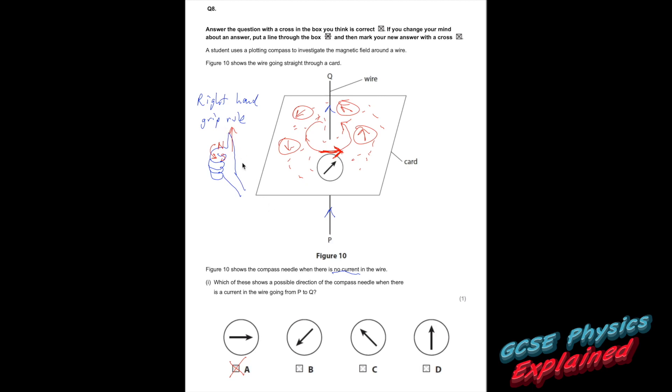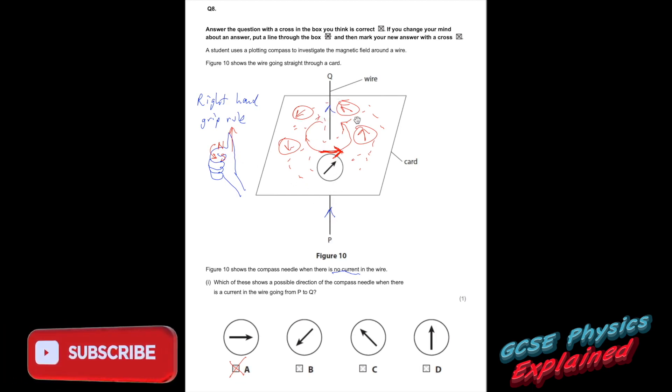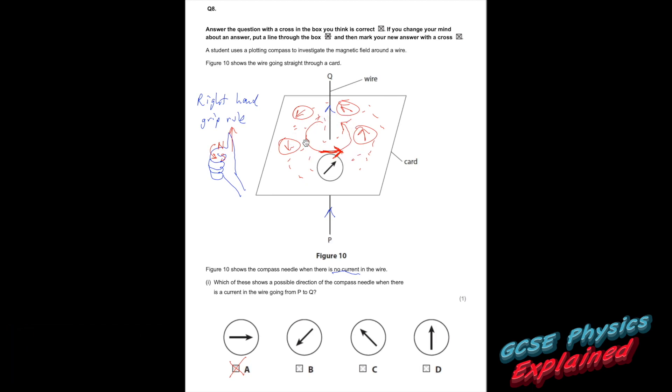Right, this is the right hand grip rule. So if you were to put your hand like that, with your crazy sausage fingers. Your thumb shows the direction of the current and your fingers would show the direction of the magnetic field. Knuckles are north, fingertips are south. So if you were looking down on the top of your hand, the field would be going anti-clockwise. So put your thumb going up from P to Q. Curl your fingers around. So the magnetic field, once there is a current in the wire, would be going anti-clockwise. So this compass is going to start pointing to the right. So the answer is A.